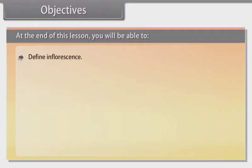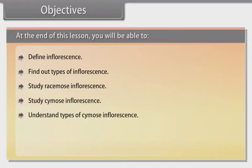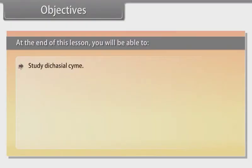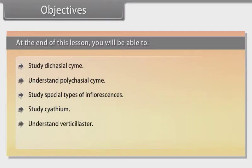Objectives: At the end of this lesson you will be able to define inflorescence, find out types of inflorescence, study racemose inflorescence, study cymose inflorescence, understand types of cymose inflorescence, study solitary cyme, understand monocasial cyme, study dicasial cyme, understand polycasial cyme, study special types of inflorescences including cyathium, verticillaster, and hypanthodium.